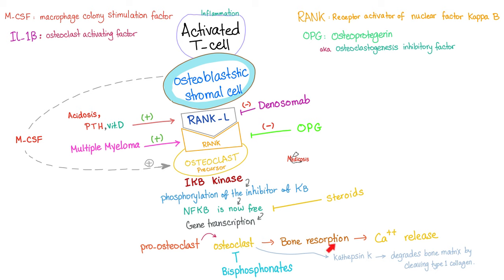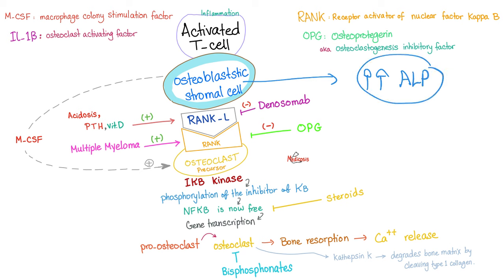When the osteoclast is active, it cuts down bone — that's bone resorption. Activating the osteoblast also triggers secretion of alkaline phosphatase, which in this context comes from bone, not the liver or biliary system. Bisphosphonates are a class of medication that can help by inhibiting the osteoclast.